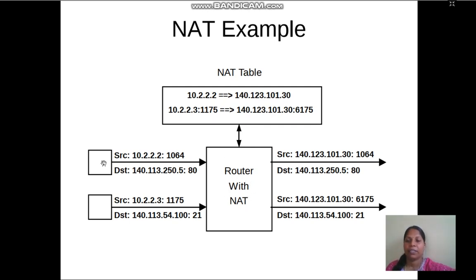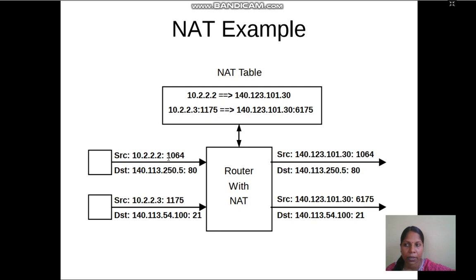The NAT process is installed inside the router. We have source machine 1 and source machine 2. Source machine 1 has IP address 10.2.2.2 and port number 1064. Port number is a transport layer concept — it means the point of communication. The mapping works as follows: 10.2.2.2 is mapped to 140.123.10.1, and the same port number is placed there, while the destination IP address and port number remain the same.